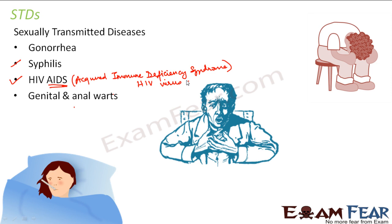Genital and anal warts are also transmitted by viruses. These are some of the diseases which are transmitted sexually, and people should be aware of the precautions they should take to prevent the transmission of such diseases.